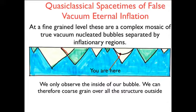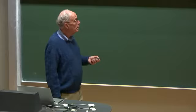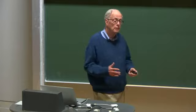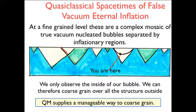But we don't observe all that. We only observe the inside of one bubble, our bubble. The problem is how is there a simple way to calculate what is the probability for our observations in one kind of bubble. And then we can coarse grain, that is ignore, all the structure that's outside. Quantum mechanics, as I hope to tell you, supplies a manageable way to coarse grain very simply.